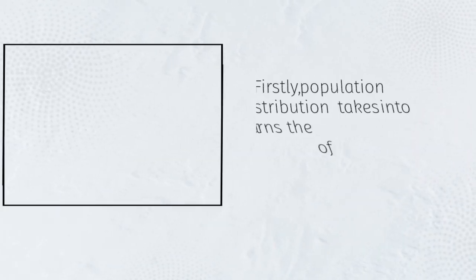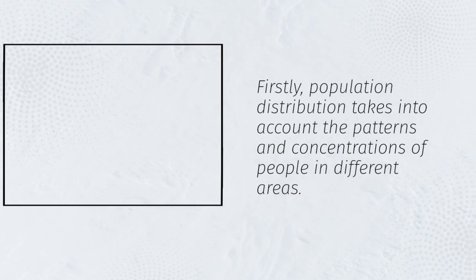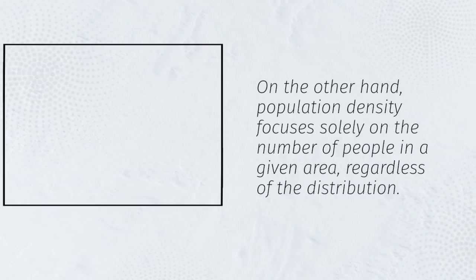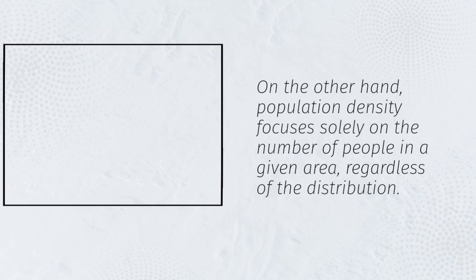Firstly, population distribution takes into account the patterns and concentrations of people in different areas. On the other hand, population density focuses solely on the number of people in a given area, regardless of the distribution.